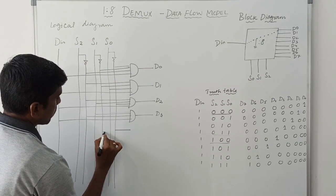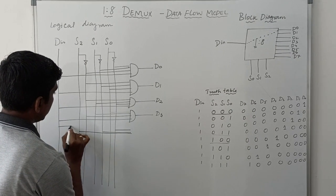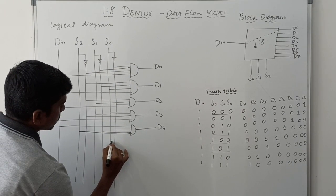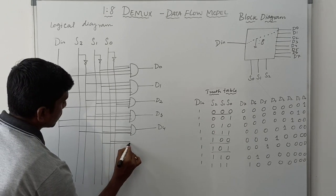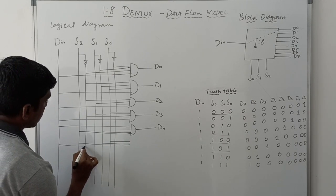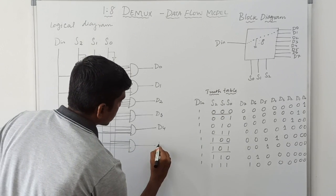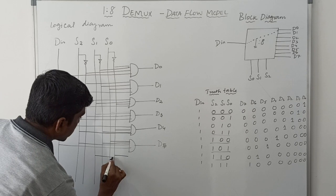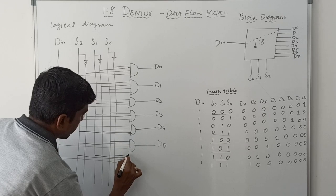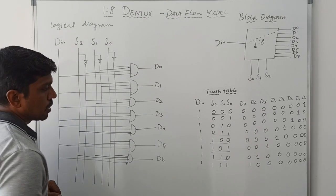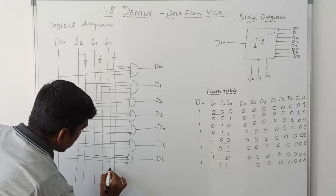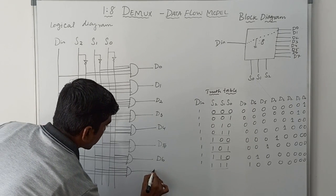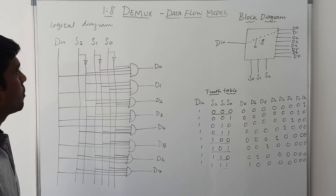Fourth combination, S2=0, S1=1, S0=1: S0=1, S1=1, S2=0, and DIN - output is D3. Next, S2=1, S1=0, S0=0: S2, not-S1, not-S0, and DIN - output is D4. Then S2=1, S1=0, S0=1: S2, not-S1, S0, and DIN - output is D5. Next S2=1, S1=1, S0=0: S2, S1, not-S0, and DIN - output is D6. Final combination, all bits 1: S2, S1, S0, DIN - output is D7. This is the logical diagram for the 1-to-8 DMUX.